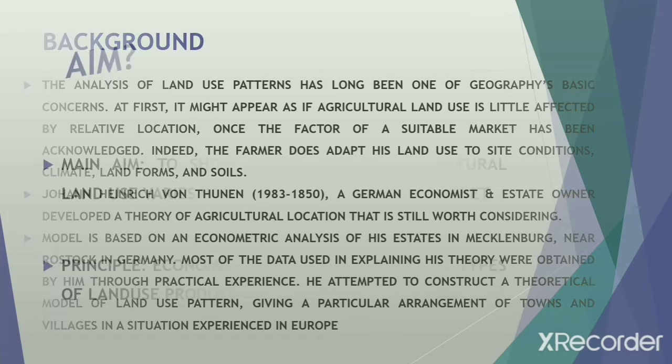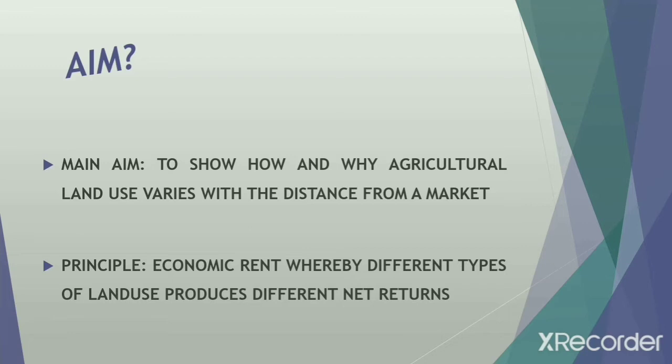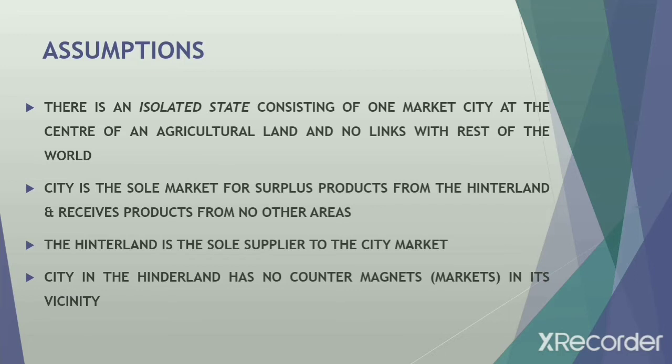The main aim of Von Thünen was to show how and why agricultural land use varies with distance from the market. The main principle behind this theory is that of economic rent, where different types of land use produce different net returns.